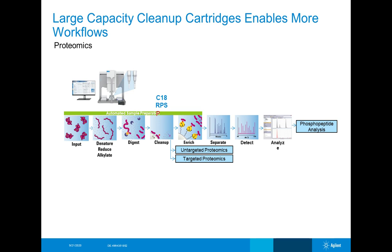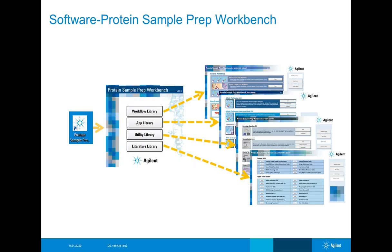Proteomics is another great place to utilize these. Using our C18 and RPS cartridges — once they're available — you can really clean up a large amount of sample for either untargeted or targeted proteomics. There are lots of different cases where you just need larger binding capacity and much higher enrichment, and that's why these large capacity cartridges are so exciting.